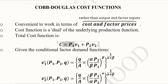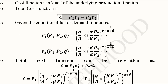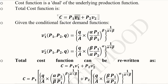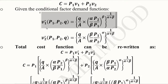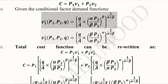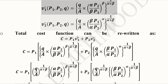Now let's start with the standard form of the cost function. Since we have to base our analysis on the Cobb-Douglas production function, we borrow the conditional demand functions developed with the help of the Cobb-Douglas production function, as we did in the last video. We are going to borrow those conditional factor demand functions — this was for the first input and this was for the second input. We put these values: instead of v1 it is v1* and instead of v2 it is v2*.